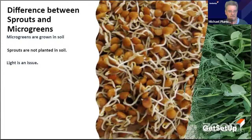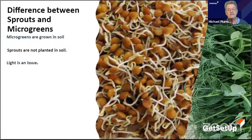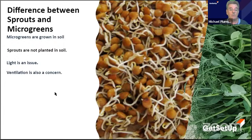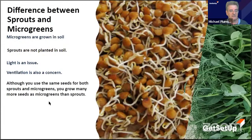Whether from a bit of sun or a grow light — if you're growing indoors — light is important. Once microgreens have sprouted and are up, they need to be in good light. The brighter the better, but not direct sunlight all day long.